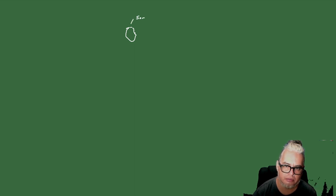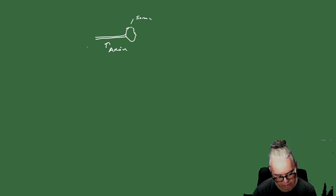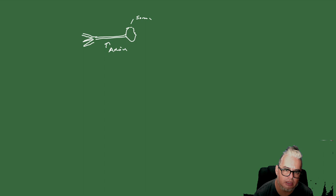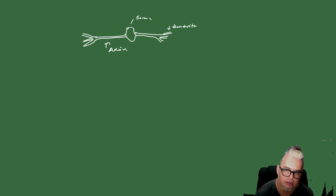Esquemáticamente, una neurona tiene una parte que es donde hace la sinapsis, una cosa que es el soma. Tiene una parte alargada que genera conexiones, que es el axón, y unas estructuras ramificadas por acá que se llaman las dendritas.